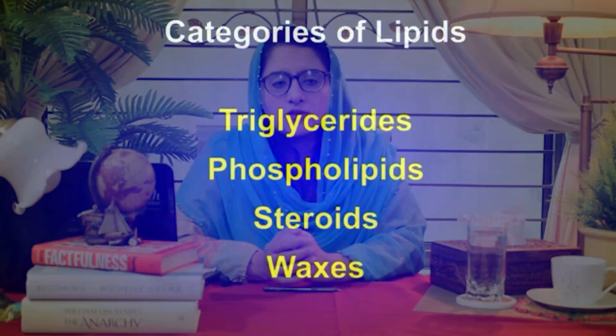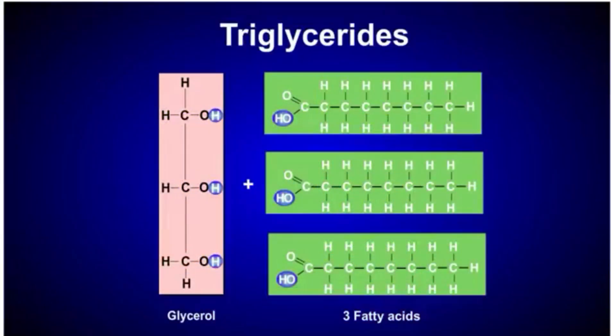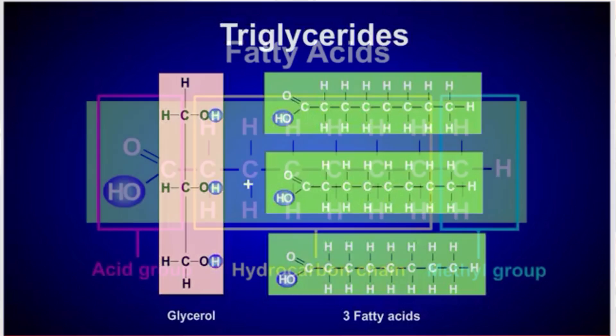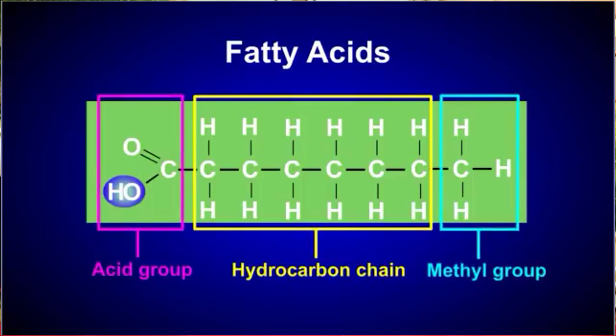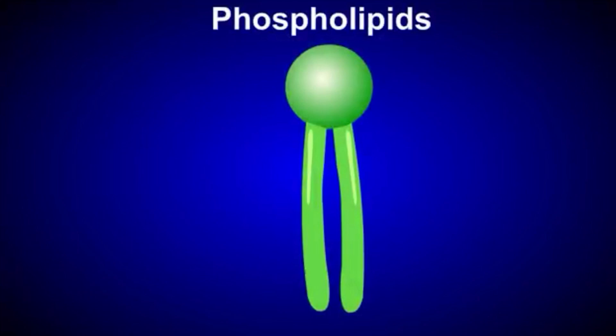Now we are going to the categories of lipids. The first category is triacylglycerides. One side is a methyl group and the other is an acid group. Triacylglycerides are also known as fats and oils. Oils are liquid at room temperature and they are unsaturated. Animal fat is solid at room temperature and saturated.